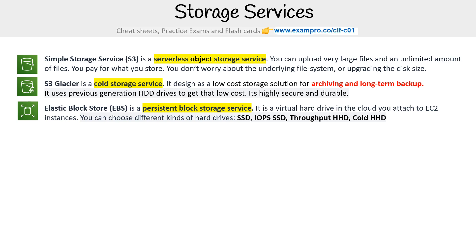We have Elastic Block Store, EBS. This is a persistent block storage service — a virtual hard drive in the cloud that you attach to EC2 instances. You can choose different kinds of hard drives: SSD, IOPS SSD, Throughput HDD, and Cold HDD.